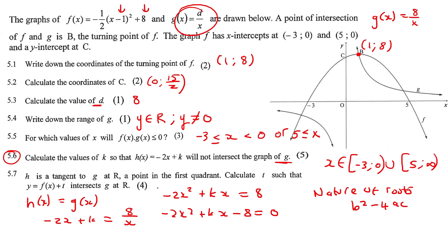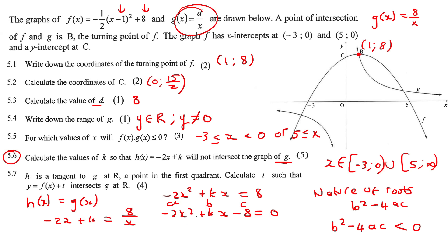If we don't want the two graphs to intersect, then the quadratic equation must have no real solution. So the discriminant b² − 4ac must be negative. Here b = k, a = −2, and c = −8. Substituting: k² − 4(−2)(−8) < 0, which gives k² − 64 < 0.